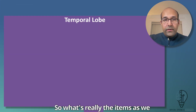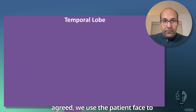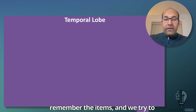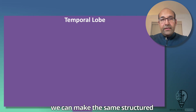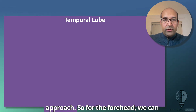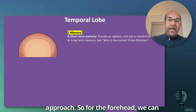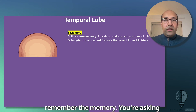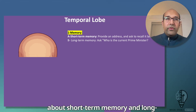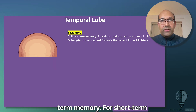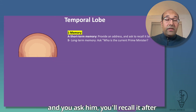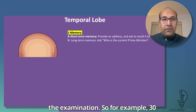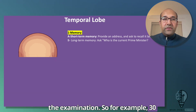We use the patient's face to remember the examination items, aiming for five items per lobe to maintain a structured approach. For the forehead, we remember memory — asking about short-term and long-term memory. For short-term memory, you give the patient an address and ask them to recall it after the examination.